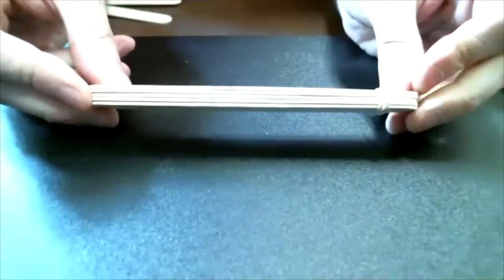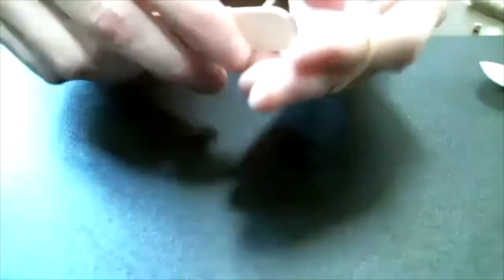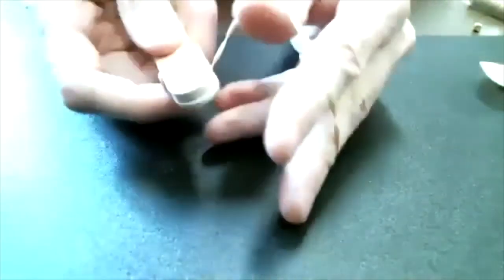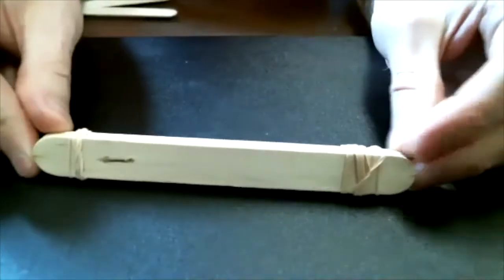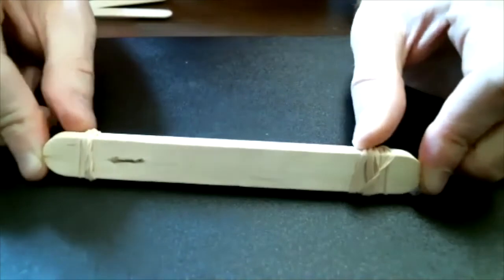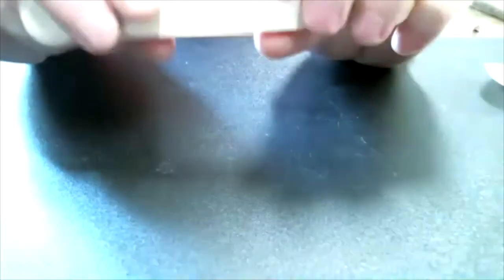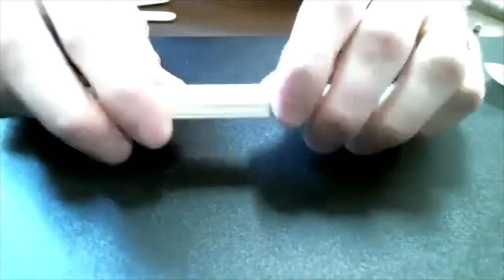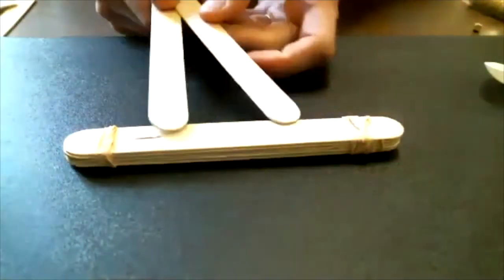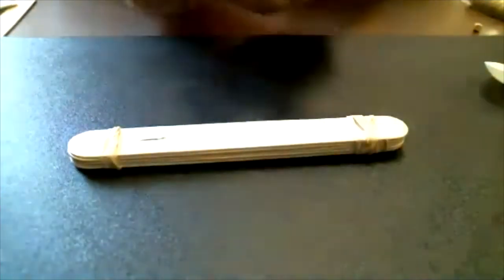That way you can wrap it around a whole bunch of times. It's hard to see. And it'll be nice and tight. So you're gonna do that at one end of your popsicle stick stack. And then you can grab another rubber band and do the same thing on the other end so it's nice and sandwiched together. We want to make sure these popsicle sticks aren't sliding around and away from each other.